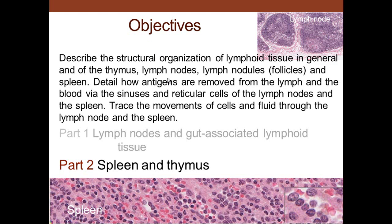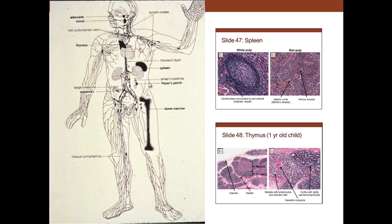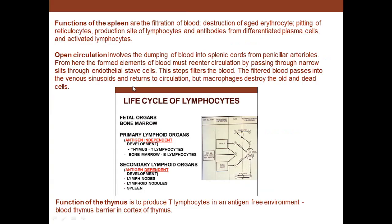We want to describe the organization of cells, talk about antigen movement inside these organs, and trace cells and fluid through them. The spleen is a secondary antigen-dependent organ, while the thymus is a primary organ.